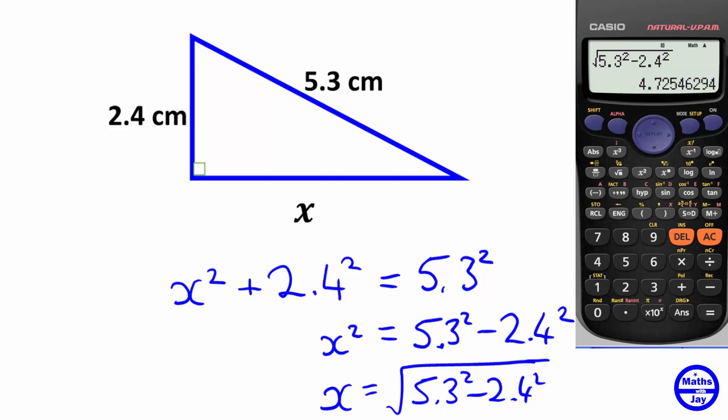And we can see that we do get an answer that's smaller than 5.3. So that's good. And how would you write this answer?